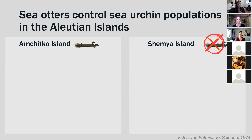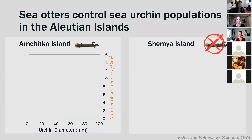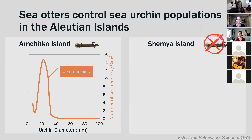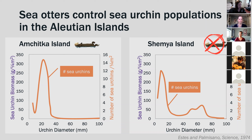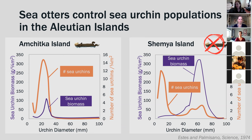Here we're going to look at sea urchins on two islands: Amchitka Island, which has sea otters, and Shemya Island, which does not. We'll start by looking at Amchitka Island — the number of sea urchins of various sizes, with urchin diameter on the x-axis and number of sea urchins on the y-axis. In this region there are a lot of small sea urchins but no very large sea urchins. Around Shemya Island — where there are no sea otters — we have small sea urchins as well, but also a second peak of large sea urchins. We can also look at sea urchin biomass. On Amchitka Island there's a peak in biomass in the smaller sized sea urchins. The peak in biomass at Shemya Island is with the larger urchins — even though there are fewer of them, they weigh more, so you get this large peak of biomass.